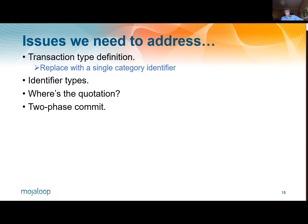So first of all, transaction type definition. MojoLoop defines the transaction type by a combination of three or four different kinds of variable, and even those aren't sufficient for completely distinguishing things that some schemes want to distinguish. So our solution to this is we replace it with a single category identifier, and that will be an enumeration which eventually we would hope to see incorporated into the ISO definition.